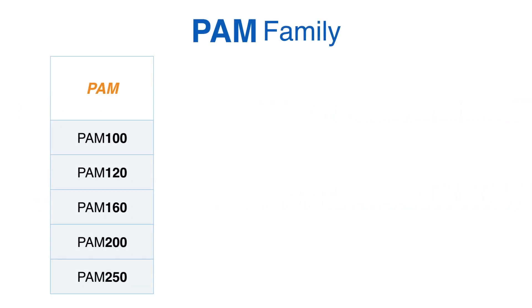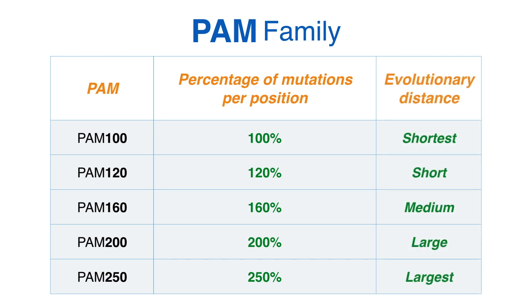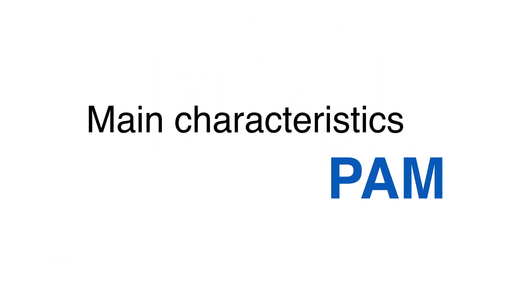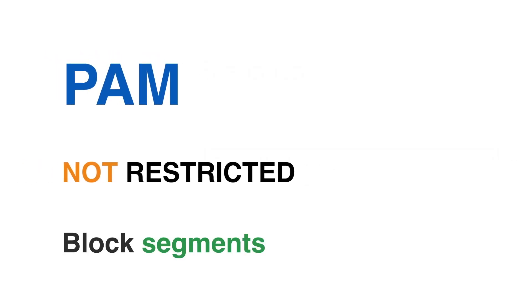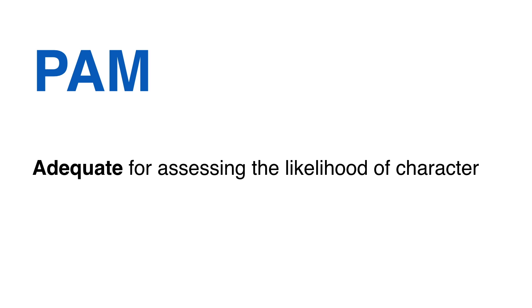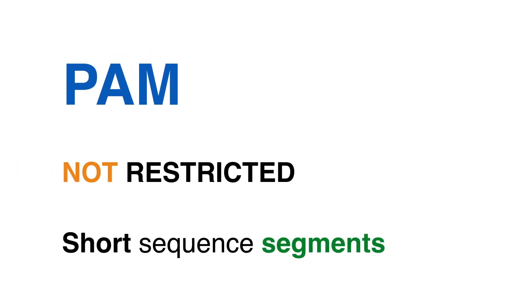Here is a summary of the most commonly used PAM matrices, each accompanied with a quality measure of the corresponding evolutionary distance. In summary, PAM is derived from statistics based on an explicit model of evolution and from observations that are global — not restricted to block segments. Precisely because of this global character, PAM matrices are more adequate for assessing the likelihood of character substitutions in closely related proteins, where similarities are more uniform and not restricted to short sequence segments.